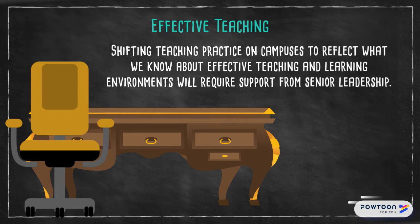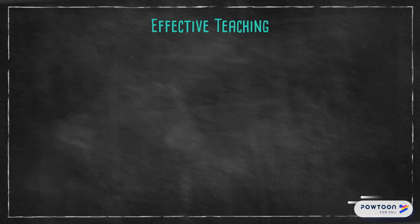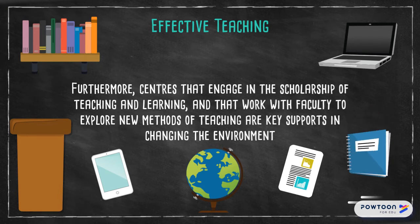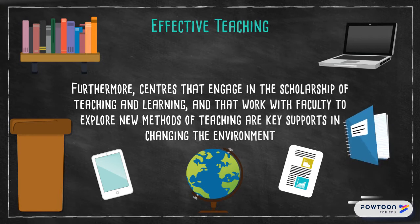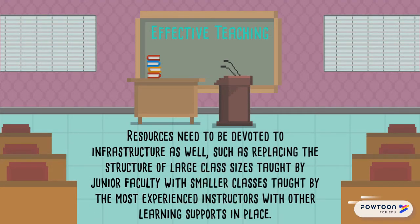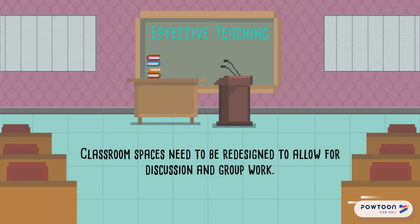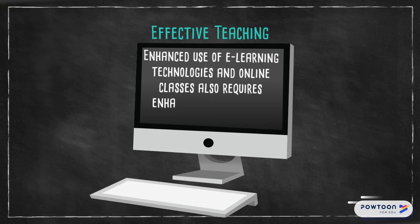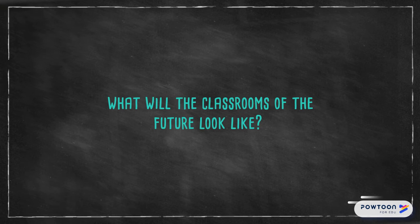Shifting teaching practice on campuses to reflect what we know about effective teaching and learning will require support from senior leadership. As Summerlee and Christensen argued, structures that reward teaching should parallel recognition for research excellence. Centres that engage in the scholarship of teaching and learning and work with faculty to explore new methods are key supports for change. Resources need to be devoted to infrastructure as well — such as replacing large classes taught by junior faculty with smaller classes taught by experienced instructors, redesigning classroom spaces for discussion and group work, and enhancing technological infrastructure for e-learning. Given all of this, what will the classrooms of the future look like? That's an intriguing question.